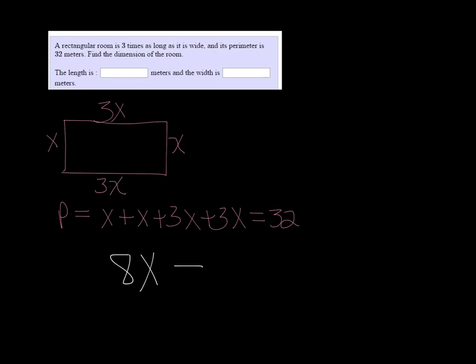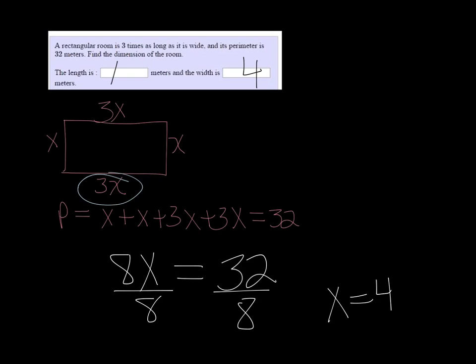Divide both sides by 8, and we get X is 4. So 4 is going to be the width—remember, that's the shorter one. And then if I multiply that by 3, because the length is 3 times that amount, I get 12. So the length is 12 meters.